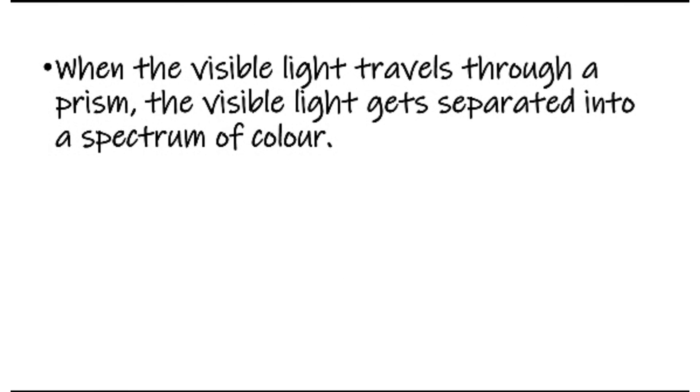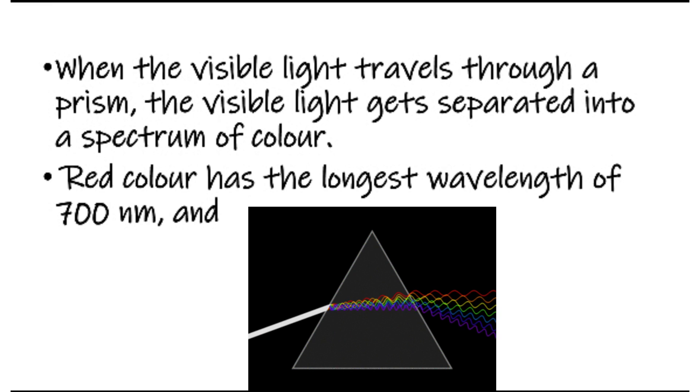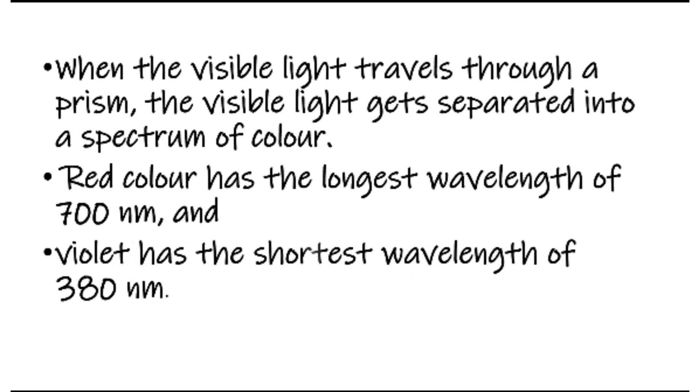When visible light travels through a prism, the visible light gets separated into a spectrum of color. Red color has the longest wavelength of 700 nanometers and violet has the shortest wavelength of 380 nanometers.